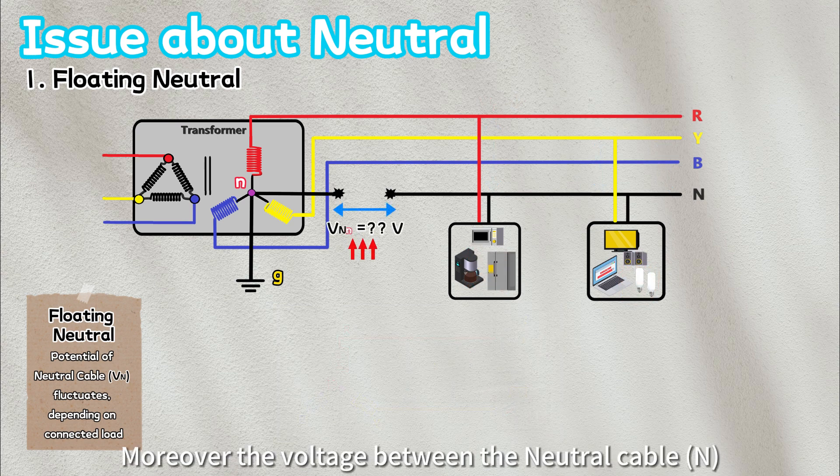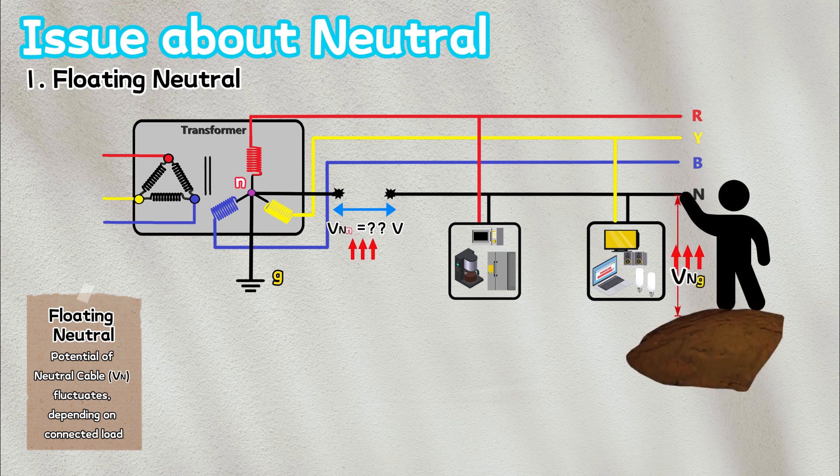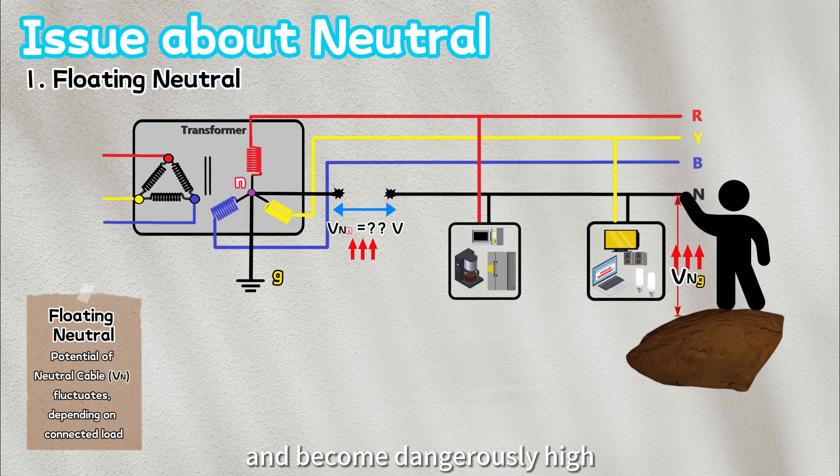Moreover, the voltage between the neutral cable and the neutral point or ground of the transformer may have a substantial value. This can threaten human safety as the voltage between neutral cable and ground may exceed the safe limit and become dangerously high.